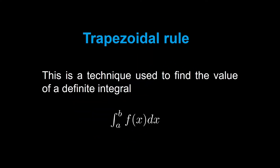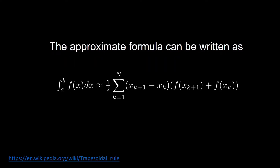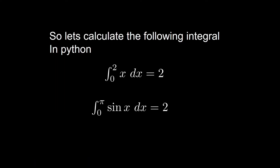For finite definite integrals we use two different rules for numerical integration: one is the trapezoidal rule and another is Simpson's one-third rule. This is the technique used to find the value of a definite integral where a and b are the lower and upper limits of the function f(x). In this method the area of the curve is approximated by a trapezoid. f(x) is the given function, a and b are the lower and upper bounds, and fa and fb are the two endpoints of the integral.